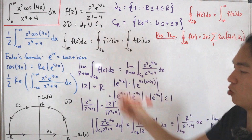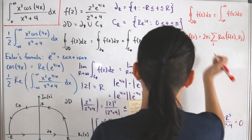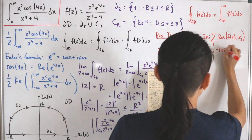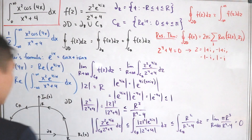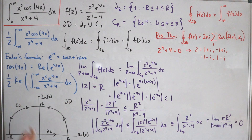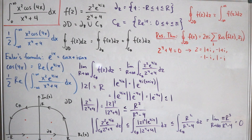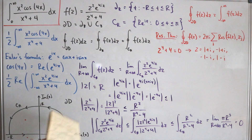To find our poles we solve z⁴ + 4 = 0, giving four solutions: z = 1+i, −1+i, −1−i, and 1−i. The poles 1+i and −1+i lie in the upper half-plane inside our contour; the poles −1−i and 1−i lie below the real axis outside the contour and can be disregarded. We must calculate two residues.